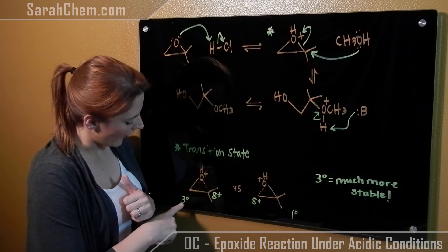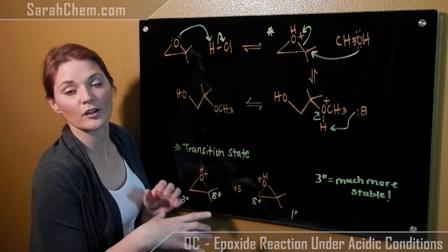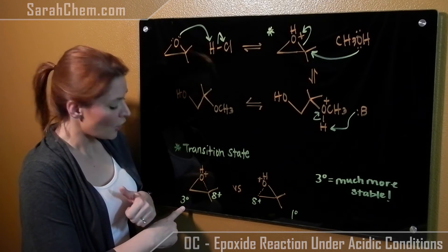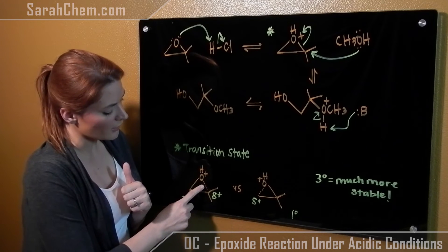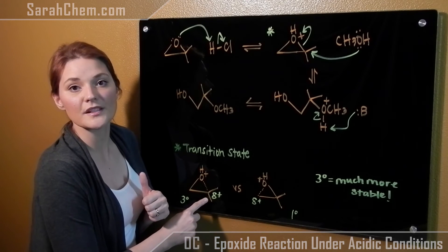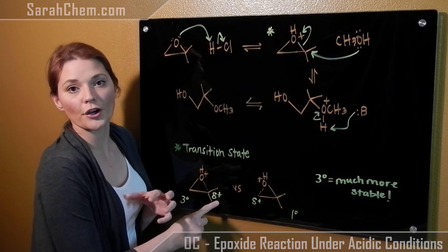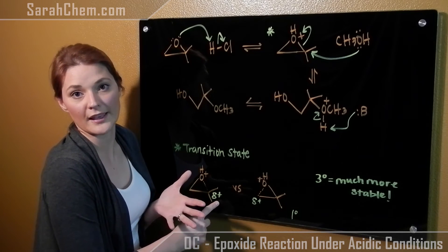Over here if it happened on this carbon, we'd have a tertiary carbocation-like transition state. The tertiary carbocation is much more stable, so that means we're going to have this bond starting to break here, meaning that carbon is bearing a pretty significant partial charge sitting on it. That partial charge would be very attractive to a nucleophile coming in.